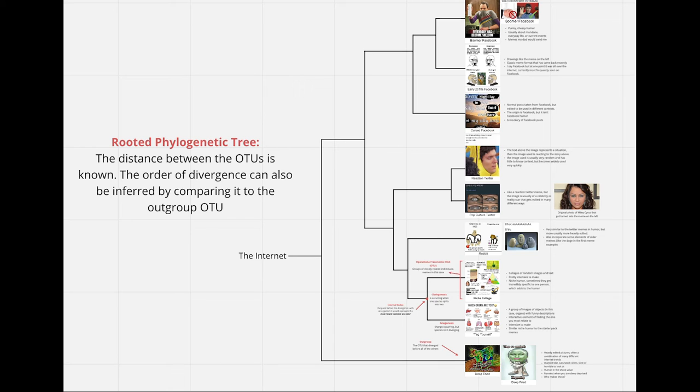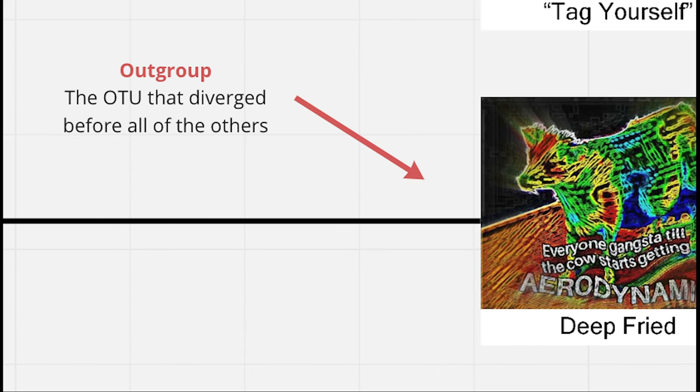However, since these are memes, we can't quantify the data and the differences are pretty subjective. An outgroup is the group furthest diverged from all the other groups.